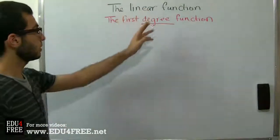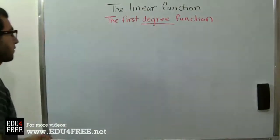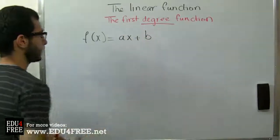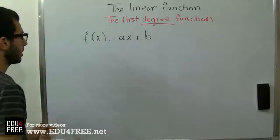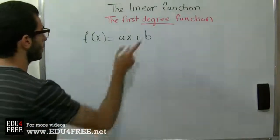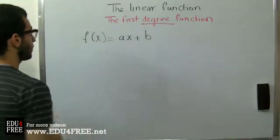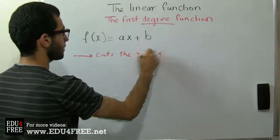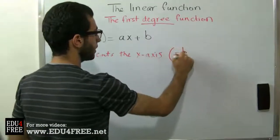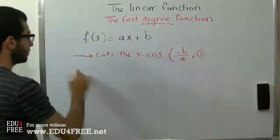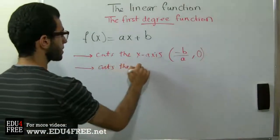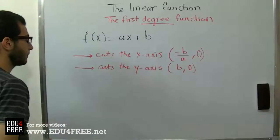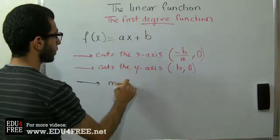Today we will talk about the linear function, or the first degree function. Such a function has the shape f(x) = ax + b. Here are some key facts: it cuts the x-axis at the point (-b/a, 0), it cuts the y-axis at the point (0, b), and the slope of the function equals a.